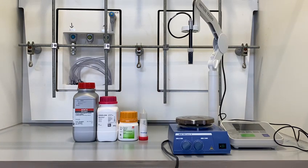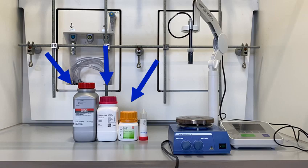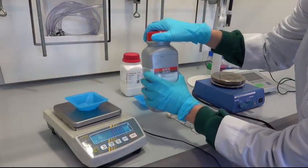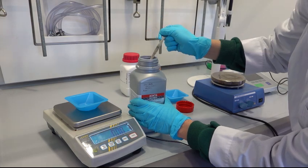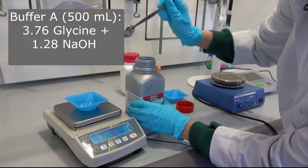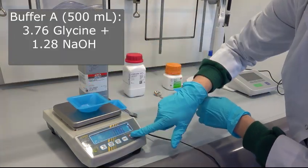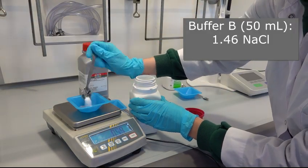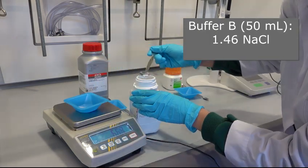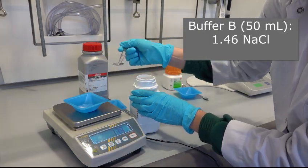For the buffer preparation, we will need sodium hydroxide, glycine, and sodium chloride. For a total preparation of 500 ml of buffer A, we are going to weigh 1.28 g of sodium hydroxide and 3.76 g of glycine. 1.46 g of sodium chloride will be used for addition to buffer B later on.